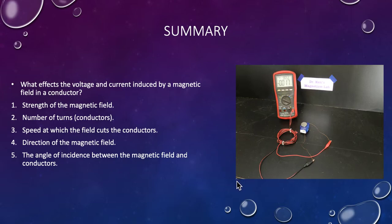So what can we summarize from our little experiments we've done? First is we can summarize what the effects on the voltage and therefore the current induced by a magnetic field are: the strength of the magnet will have an effect, the number of turns of the conductors will have an effect, the speed at which the field cuts the conductors will affect it, the direction of the magnetic field will have an effect, and again the angle of incidence between the magnetic field and the conductors will have a dramatic effect on how much voltage is induced.